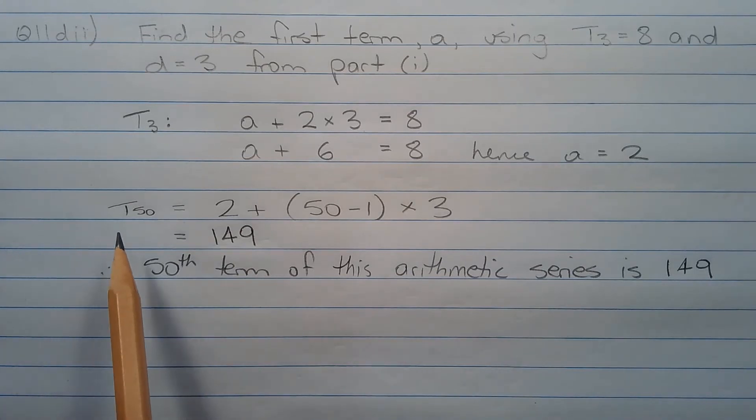Now to find the 50th term, we let n equals 50. So T50 is equal to 2 plus 50 minus 1 times 3, which equals 149. Therefore, the 50th term of this arithmetic series is 149.